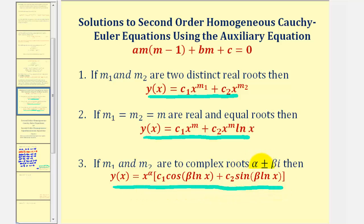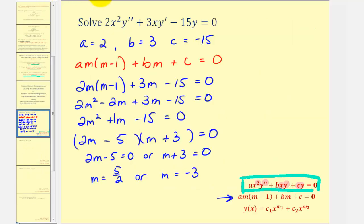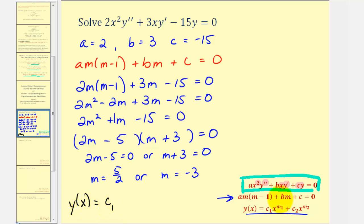Going back to our example, because we have two distinct real roots, the general solution is given by y of x. Our general solution, y of x, is equal to c sub one times x raised to the power of five halves, plus c sub two times x raised to the power of negative three.